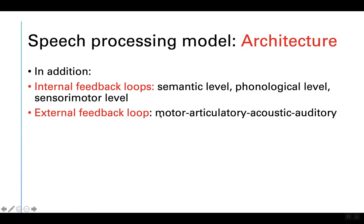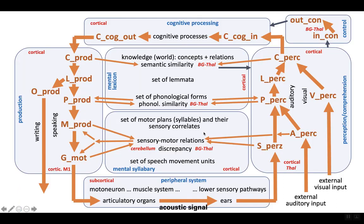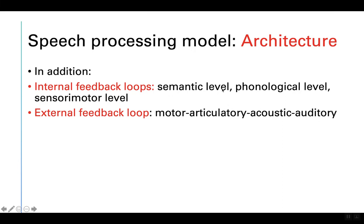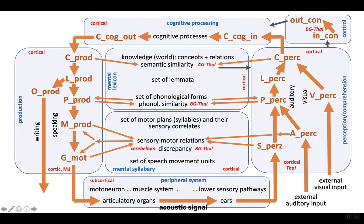First we have the external feedback loop — when we produce speech, meaning we move articulatory organs and generate acoustic output, that output can be fed back into and controlled by the model. But we also have internal control paths on the semantic and phonological levels. We can produce an output and internally monitor whether this output was produced correctly — either by internal listening at the phonological level or by internal semantic evaluation.